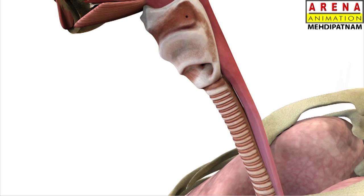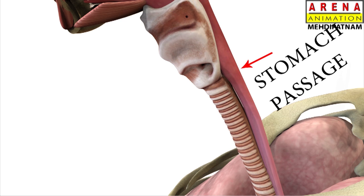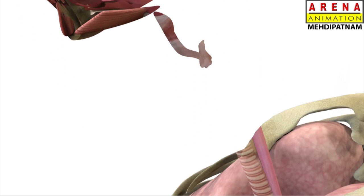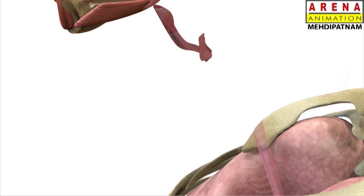Pharynx is a common passage of the digestive and respiratory system. At the pharynx, there are two passages beginning with nearly the same opening — one enters into the stomach, which carries food to the stomach, and the other enters into the lungs to carry air. To avoid the entry of food into the respiratory tract, a flap-like muscular valve called the epiglottis is located here. The main function of the epiglottis is to avoid the choking of food in the respiratory tract.